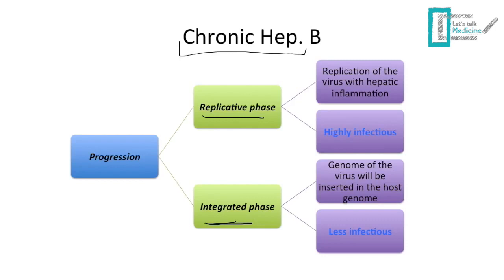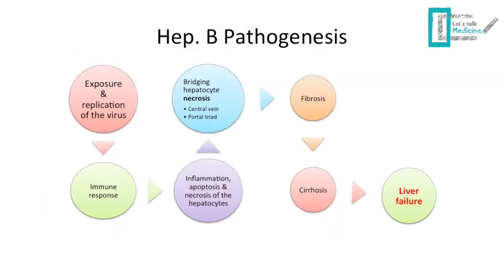For chronic hepatitis, there are two phases: the replicative phase and the integrated phase. The replicative phase is mainly concerned with viral replication and liver inflammation, and this phase is highly infectious. In the integrated phase, the virus inserts its genome within the host genome, and this phase is less infectious. This slide provides a summary of the course of the disease.